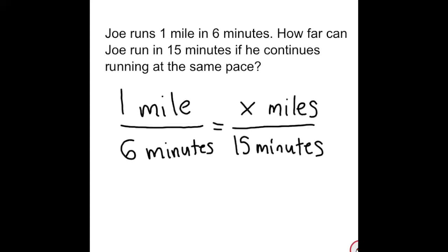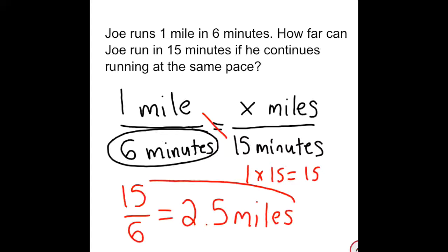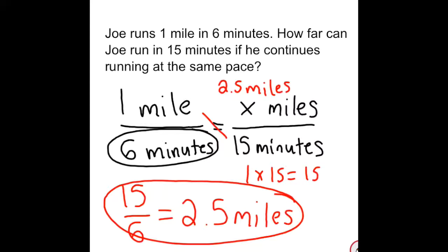First I need to multiply the two values across from one another: one times 15, which is equal to 15. Then I divide by what I have left, which is the six minutes. So 15 divided by six is equal to 2.5 miles. Joe can run 2.5 miles in 15 minutes.